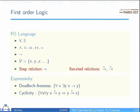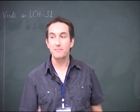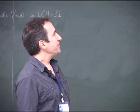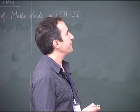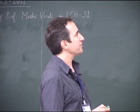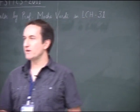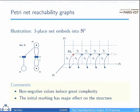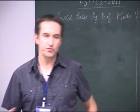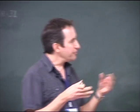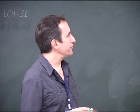As I mentioned earlier, we use first-order logic to capture the structure of these graphs. This language is very classical: we have quantification, connectives, negation, and a set of variables. Here the variables represent markings. What enables us to speak about the structure is the step relation and also the iterated relation — this logical language enables us to speak of the structure of the graph.